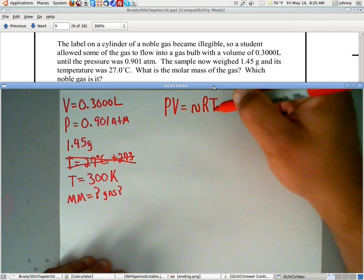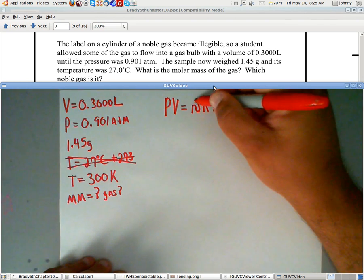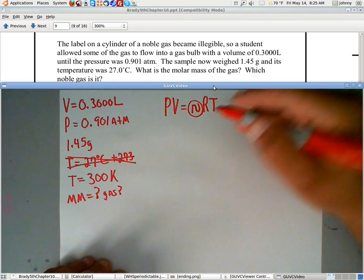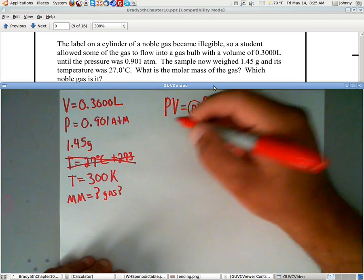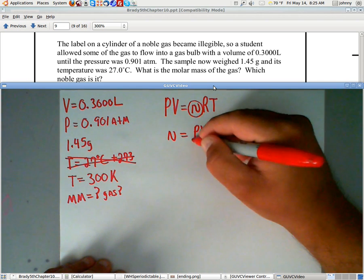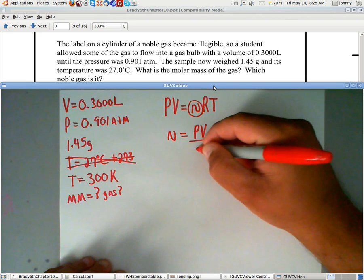Now, if you look here, the closest thing that we're going to be able to find is moles. So, let's go ahead and get n by itself. This would be n equals PV over, now remember we're going to move the R and the T straight down to the bottom here. So there's RT.